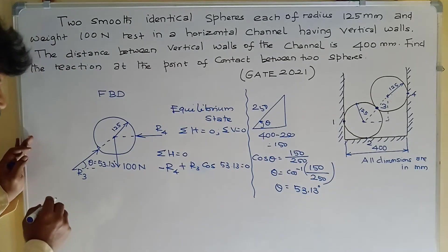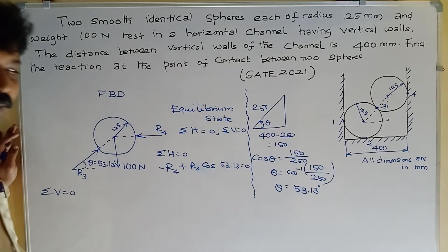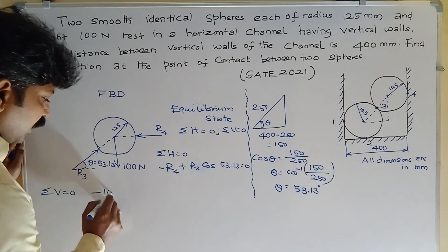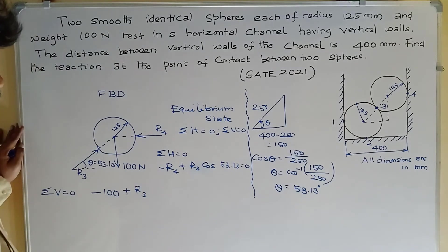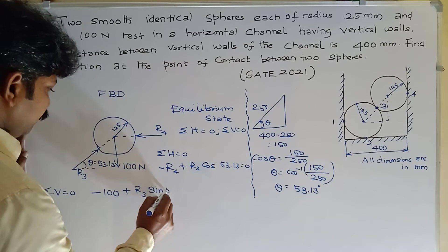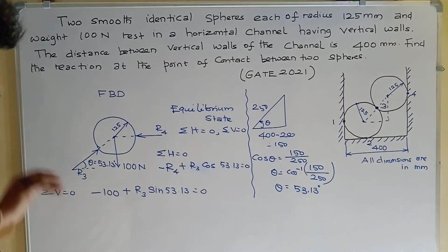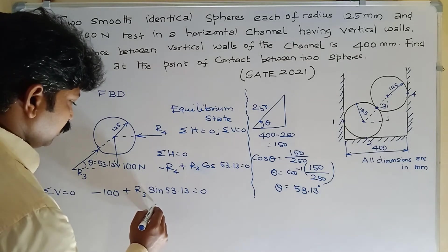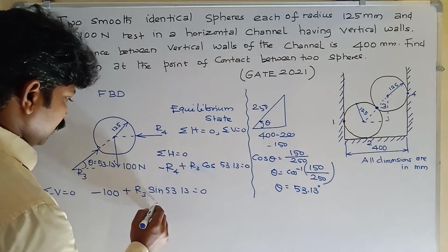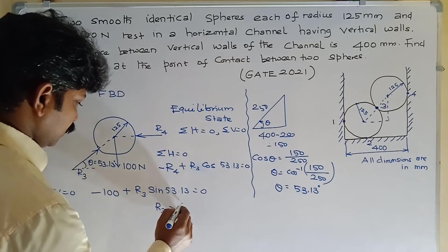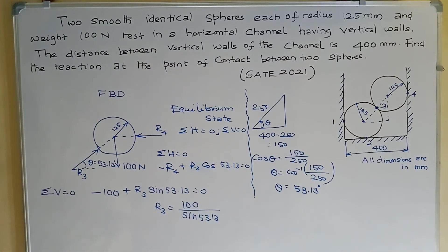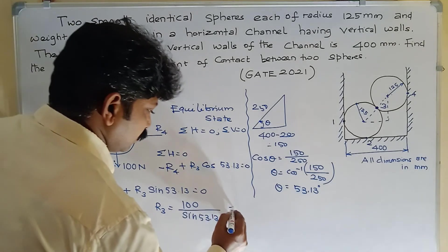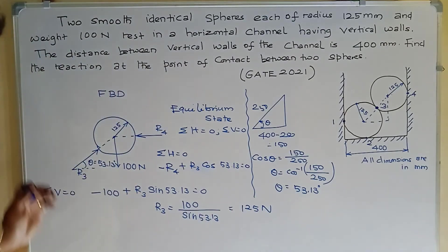Now applying sigma V = 0: minus 100 plus R3 sin 53.13 = 0. So R3 = 100 divided by sin 53.13, which equals 125 Newton.